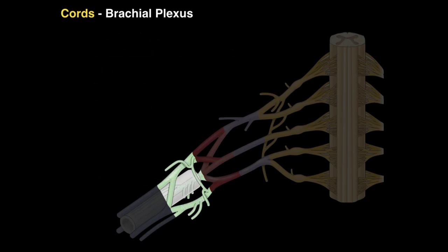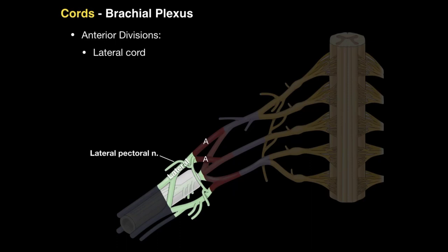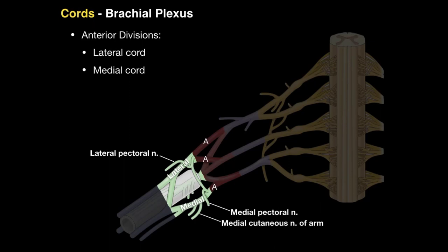The anterior divisions of the upper and middle trunks give rise to the lateral cord, which has one branch: the lateral pectoral nerve that contributes to pectoralis major innervation. The anterior division of the lower trunk continues to become the medial cord, which has three branches: the medial pectoral nerve innervating pec minor and major, the medial cutaneous nerve of the arm, and the medial cutaneous nerve of the forearm.